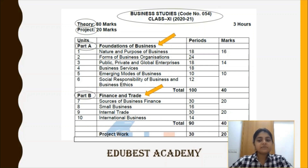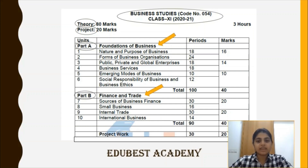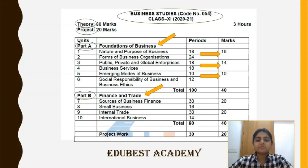Further, the chapters have been divided into units and marks are allotted likewise. For example, the first two units of section A are of 16 marks, the next two are of 14 marks, and the last two units are of 10 marks. Similarly in Part B, the first two sections are of 20 marks and the last two are also of 20 marks.